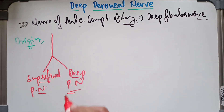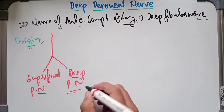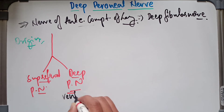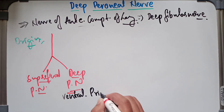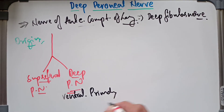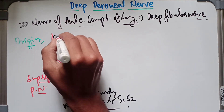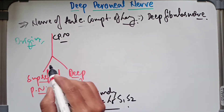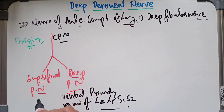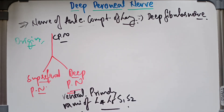The deep peroneal nerve represents the ventral primary rami of root values L4, L5, S1, and S2. So the common peroneal nerve gives two branches — the superficial peroneal nerve and the deep peroneal nerve — and this deep peroneal nerve carries the ventral primary rami of L4, L5, S1, and S2.